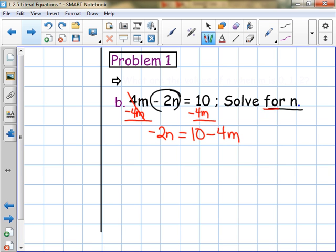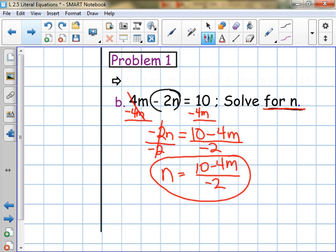Have I solved for n? No. I have negative 2n. So to solve for just n or 1n, I have to divide this side by negative 2, because negative 2 divided by negative 2 is 1, or those two cancel, and I'm left with n. What I do on one side of an equation, I have to do on the other side. So I divide the entire right-hand side by negative 2. And what I'm left with is 10 minus 4m over negative 2. Now, there is a way that you can reduce this equation, but I'm going to let you just stop right there. That's the answer.